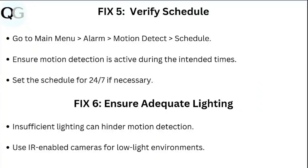Step five: verify schedule. Go to the main menu, then alarm, then motion detection or schedule. Ensure motion detection is active during the intended time. Step six: check lighting conditions. Insufficient lighting can hinder motion detection. Use IR-enabled cameras for low-light environments.